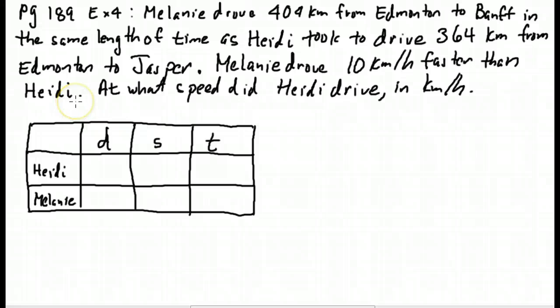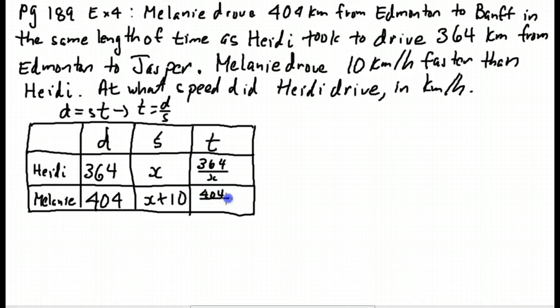Next example, page 189 example 4. You can pause and read this if you like. I've made a table, distance, speed, time. When I do distance speed time problems, when distance is speed times time, I like to make a table. Melanie drove 404 kilometers from Edmonton to Banff in the same length of time. That means our times are going to be equal. Same length of time as Heidi took to drive 364 kilometers from Edmonton to Jasper. Melanie drove 10 kilometers per hour faster than Heidi. And what do we want to find? At what speed did Heidi drive in kilometers per hour? Let's throw in x. And Melanie drove 10 kilometers per hour faster, so x plus 10. And time, time is distance over speed.